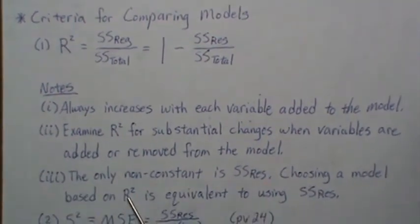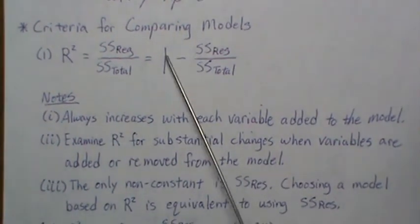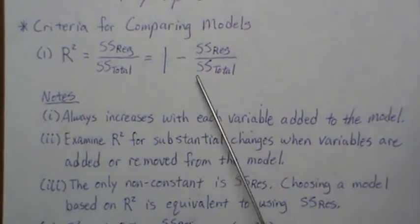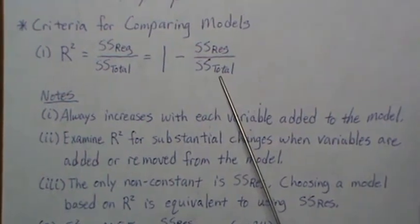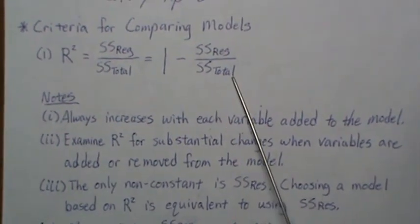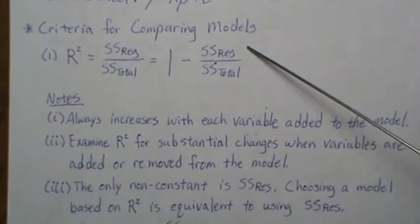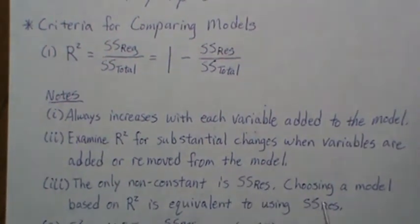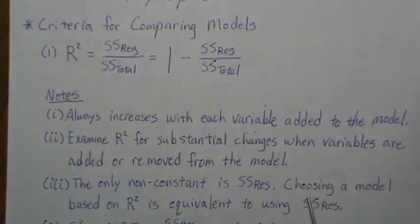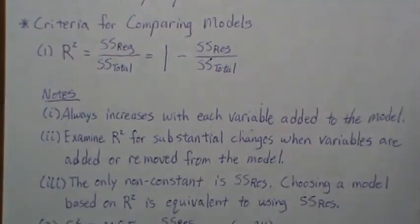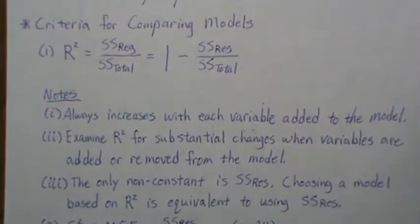Notice the formula: one minus sum of squares residual over sum of squares total. The one is a constant and the Y data doesn't change, so sum of squares total doesn't change when we use different numbers of predictor variables. The only non-constant is sum of squares residual. So choosing a model based on R squared is actually equivalent to finding the smallest sum of squares residual — if you find the model with the smallest sum of squares residual, you've found the maximum R squared value.